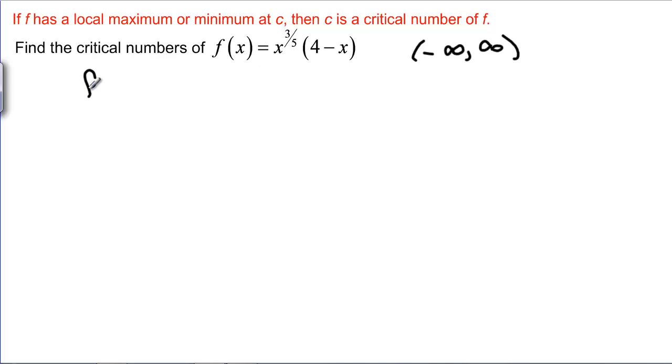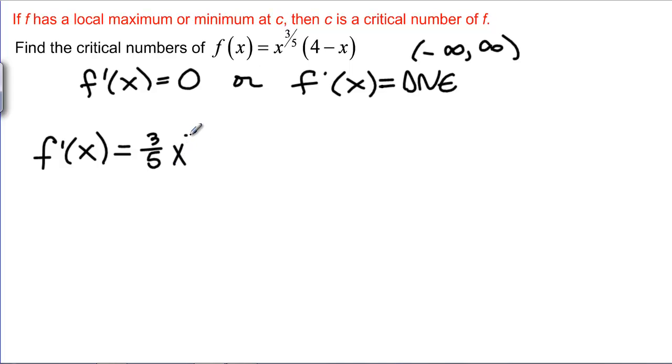Well that means we're looking for the places where F prime of X equals 0 or F prime of X does not exist. So let's find F prime of X. We need to use the product rule. So the derivative of X to 3 fifths is 3 fifths X to the negative 2 fifths. We keep the 4 minus X plus X to the 3 fifths and then the derivative of 4 minus X is negative 1.